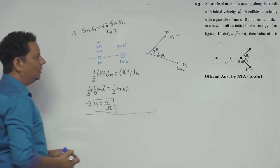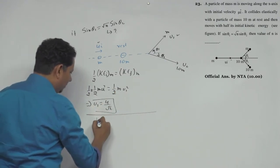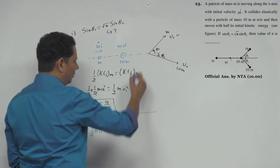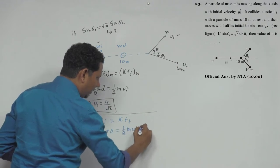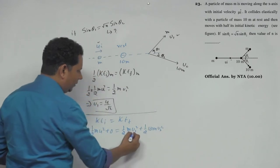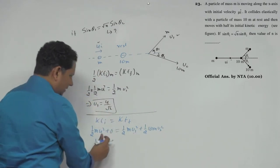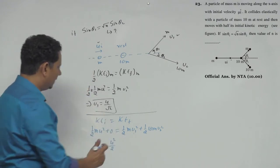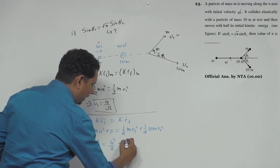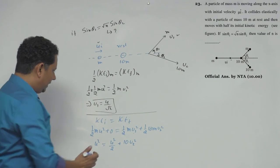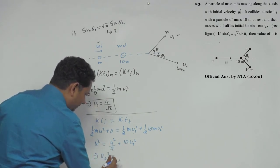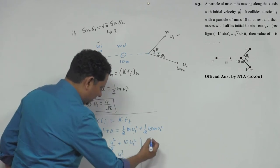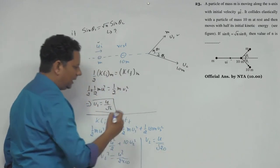Now applying conservation of kinetic energy: initial KE equals final KE. ½mu² + 0 = ½mv₁² + ½(10m)v₂². Canceling ½m: u² = u²/2 + 10v₂². Substituting v₁ = u/√2, we get u² = u²/2 + 10v₂². Solving: v₂² = u²/20, which gives v₂ = u/√20.